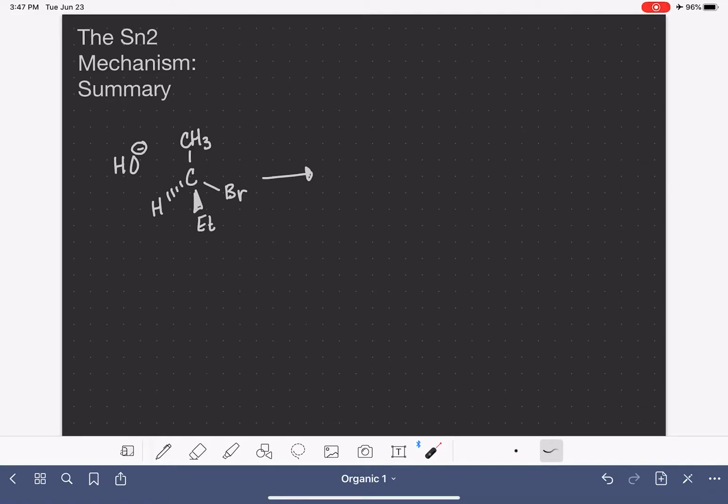This is a quick and dirty summary of the features of an SN2 mechanism. The SN2 mechanism involves two molecules or compounds colliding with each other in the initial step, the slow step of the reaction.